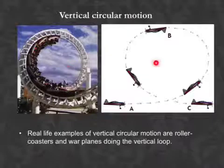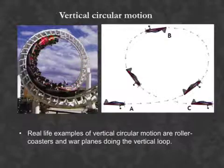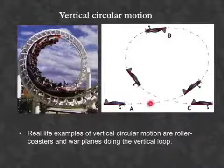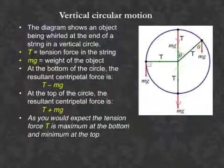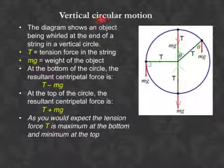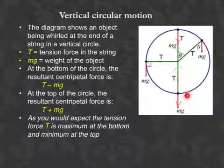And these are two real-life examples. One is roller coasters doing these circular motions. The other one is the airplane doing loop-de-loop. Vertical circular motion continues. Look at this diagram here. This object doing this vertical circular motion. We just look at two important positions: top and bottom.